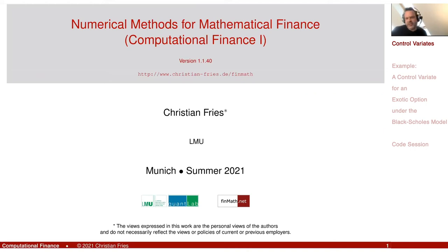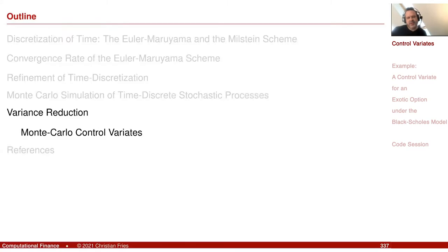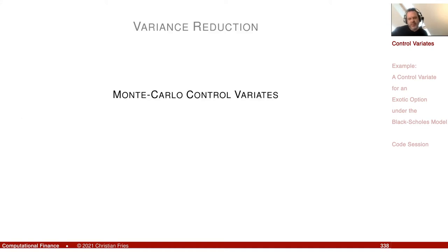The section on control variance in the script is at the end of our section on time discretization of stochastic processes. It has nothing to do with stochastic processes — it is actually related to the Monte Carlo method. The concept is quite general, as you will see from the slides. The topic is variance reduction.